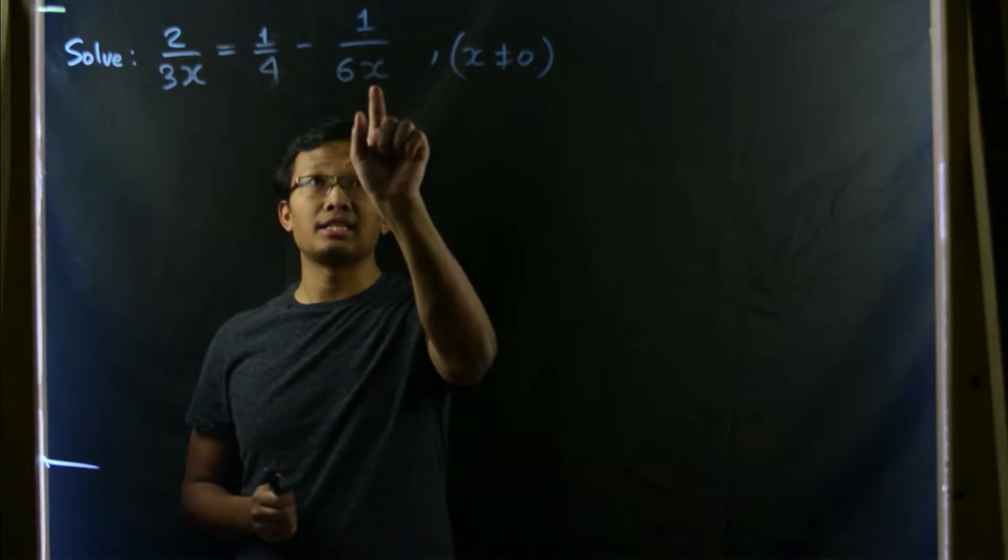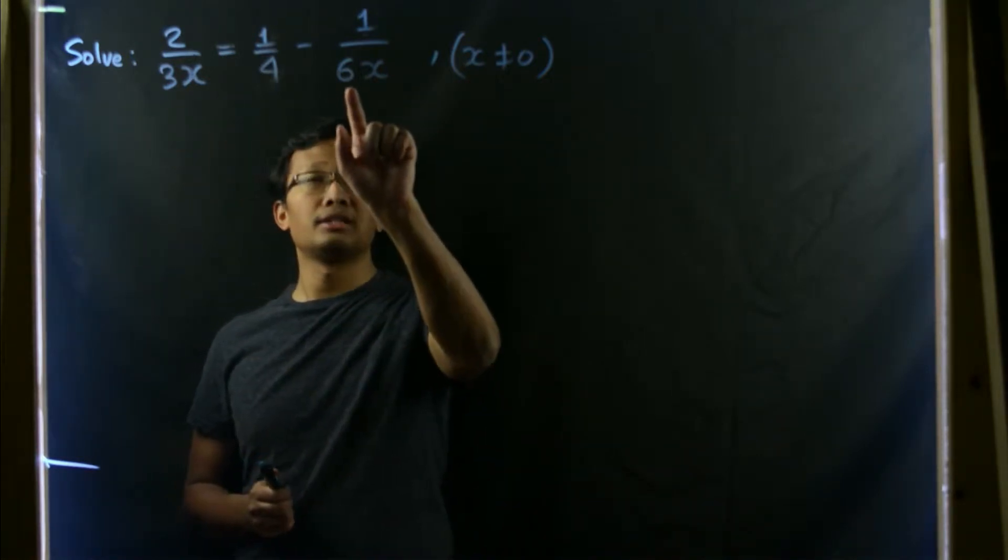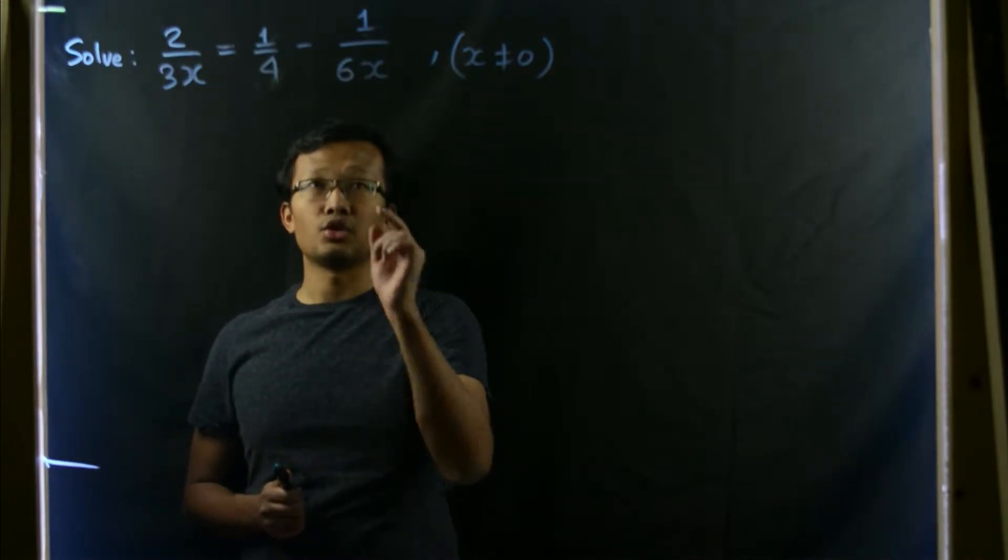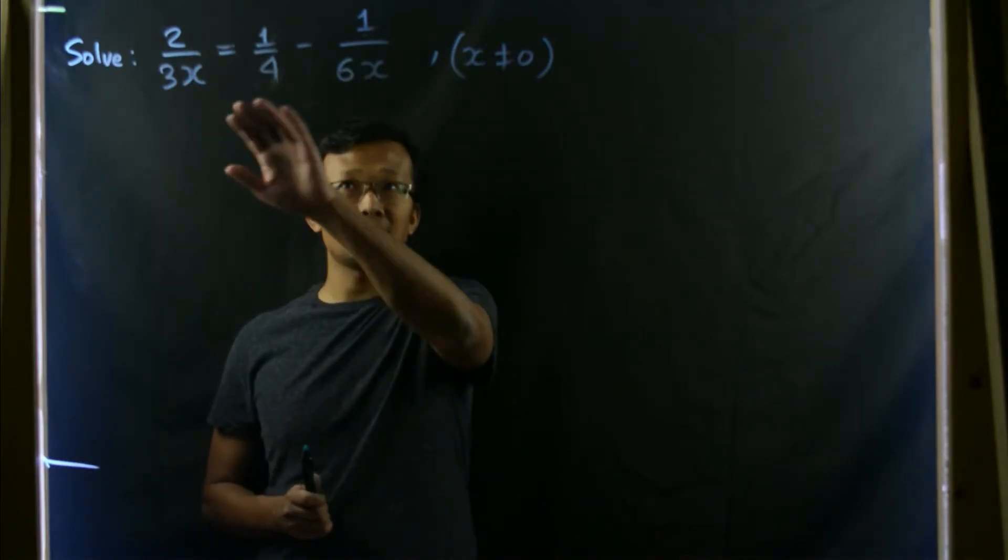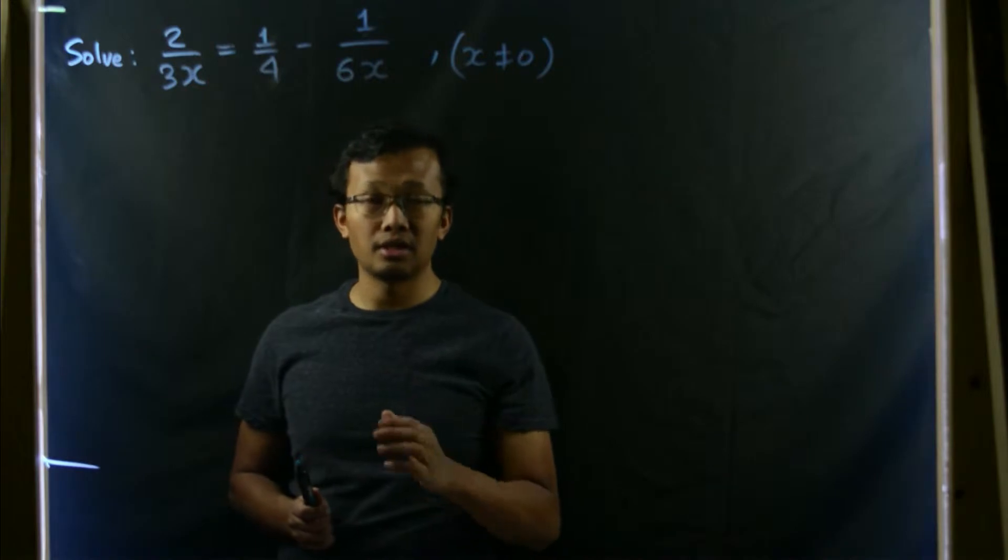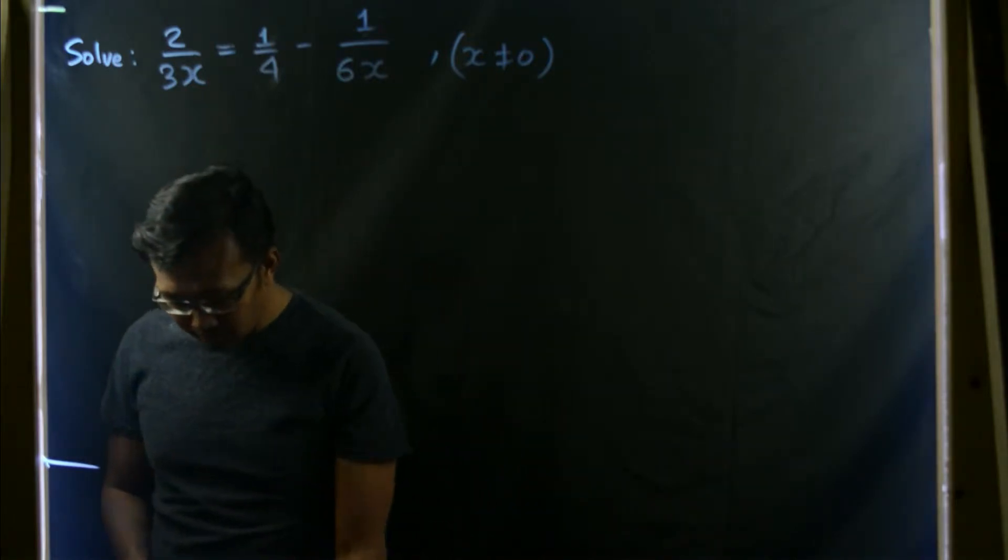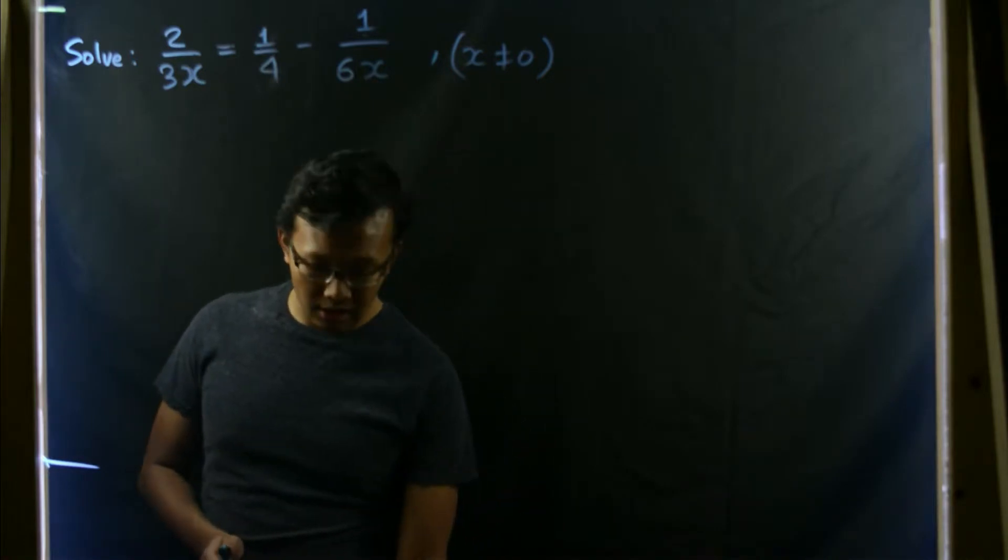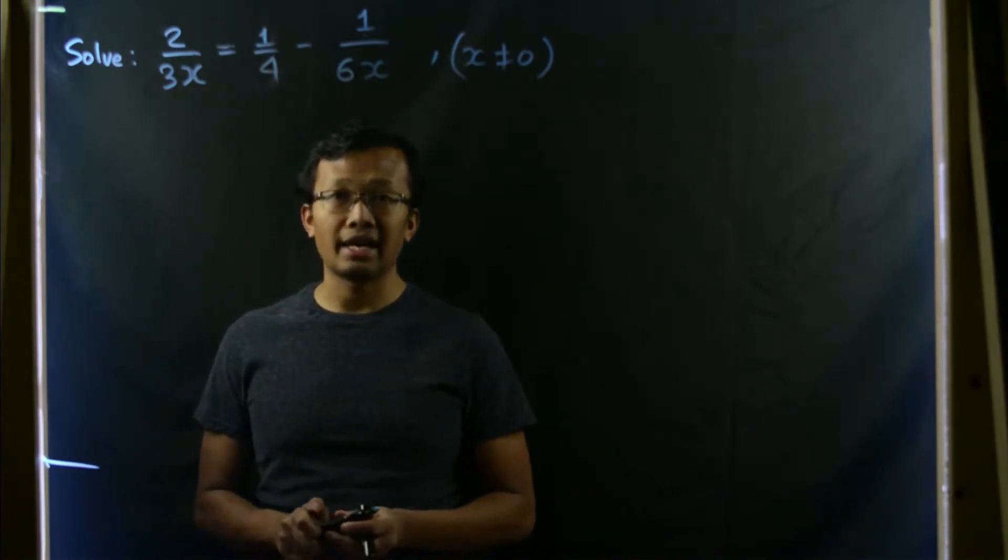Here you can see 3x and 6x are two denominators involving x. And 6x is greater than 3x, and 3 and 6 have some factor in common. So I will multiply this entire equation by 6x at first. Doing so, we'll get rid of the x's in the denominator.